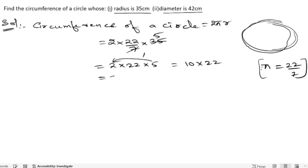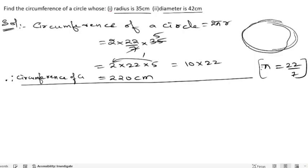We got the circumference of the circle. So lastly we will write: circumference of a circle is 220 centimeters. Now let us write down and solve the second one.